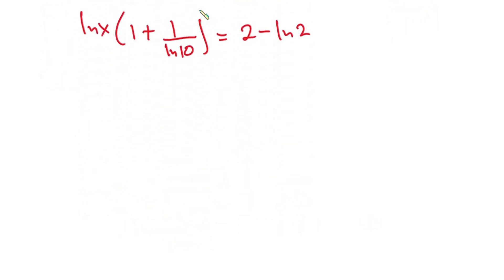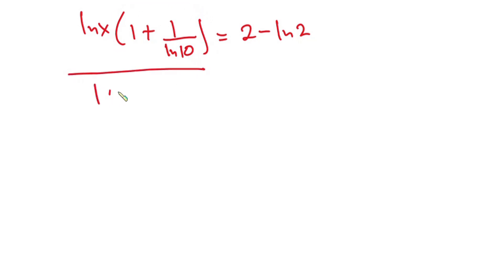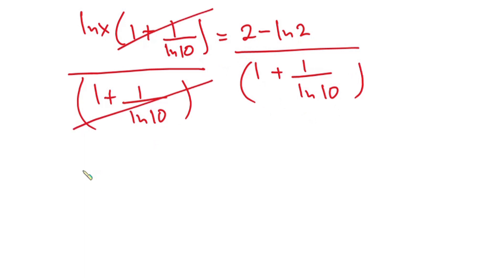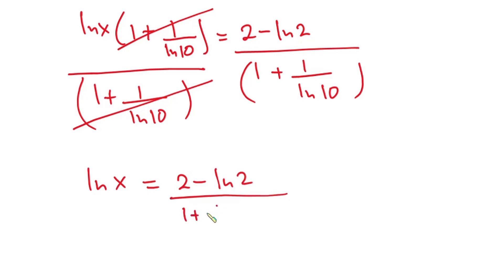Now let's divide each side of the equation by (1 plus 1 over natural log of 10). So we have natural log of x is equal to (2 minus natural log of 2) over (1 plus 1 over natural log of 10).